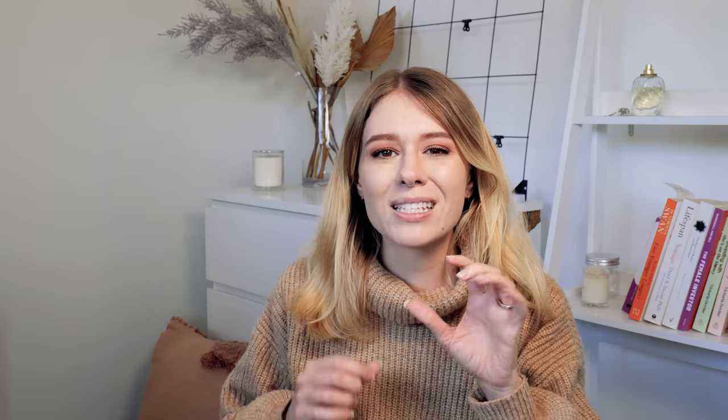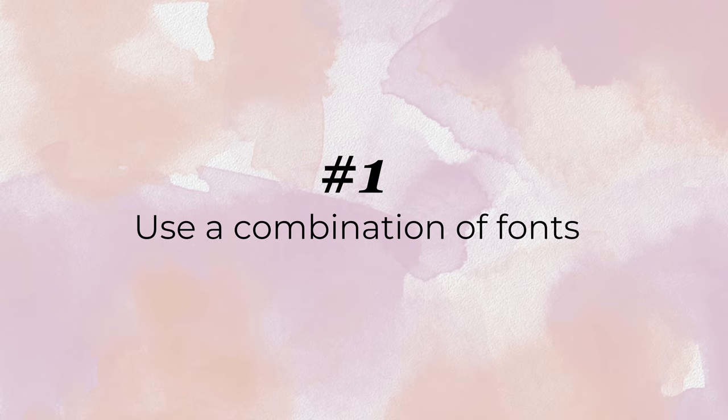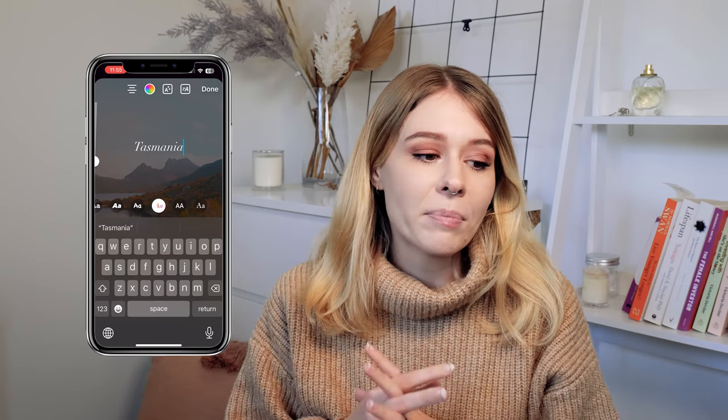I think it's really hard with Instagram reels sometimes to get some trendy looking text, especially if you're using the Instagram editor and not an external program like Premiere, DaVinci, or Final Cut. However, if you are going to use the Instagram editor, there are a few little tricks you can use to make your text and fonts a little bit more interesting and creative. My first point is to use a combination of fonts. The two main trending ones I tend to see are actually two of the last fonts in the list on Instagram — I'll put them up on screen so you can see them.